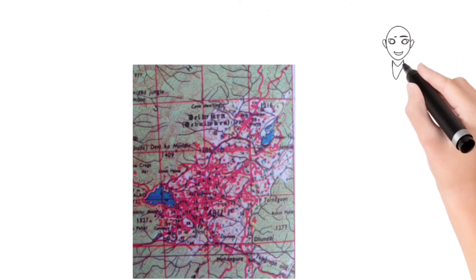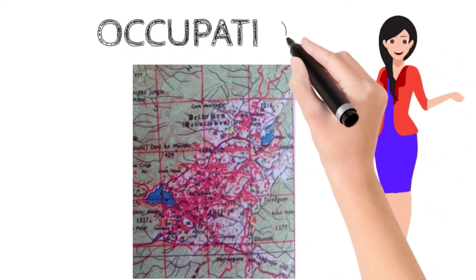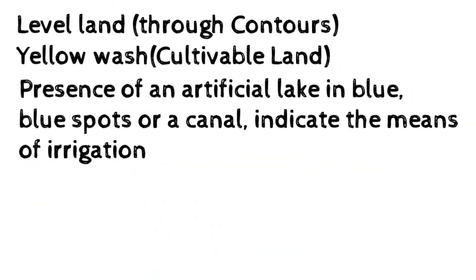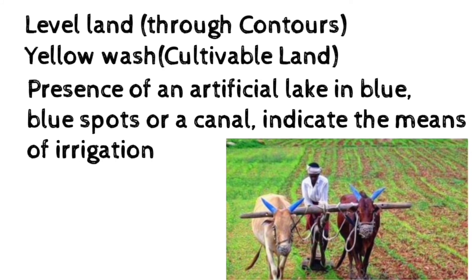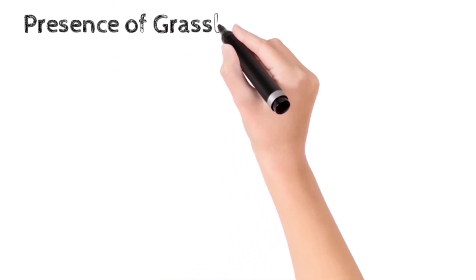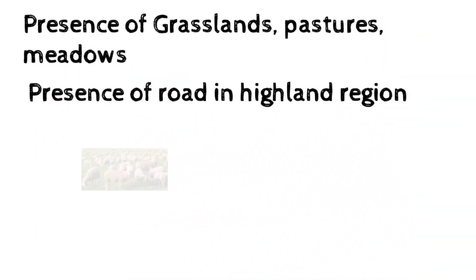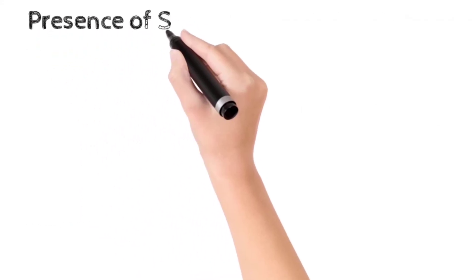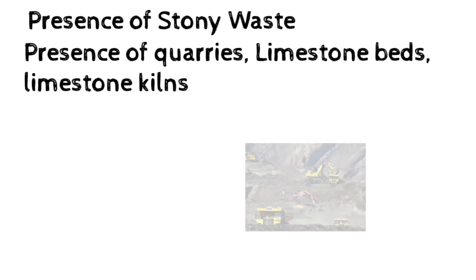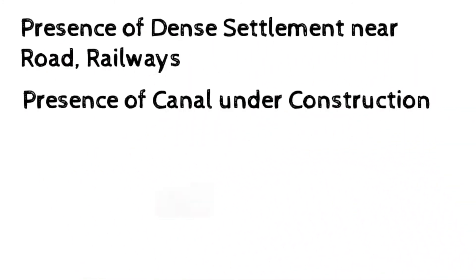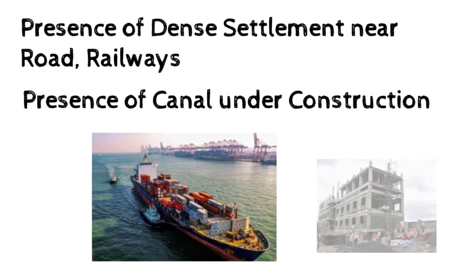A good reading of conventional signs and symbols, apart from interpreting settlement information, can tell a lot about the people's occupation of an area. Yellow color indicates cultivable land, so a plain in yellow wash with wells shows that people are engaged in farming. Mountainous regions in green show dense forest, where the occupation may be lumbering or forestry. Areas indicating grasslands, meadows, pastures, open scrub, and presence of roads in highlands show that the occupation may be cattle rearing or sheep rearing. Presence of stony waste quarries and limestone beds shows that people may be working in mines. Existence of communication links like roads and canals under construction indicates that people may be working at construction sites, and dense settlement near roads indicates that trade too would be an occupation.